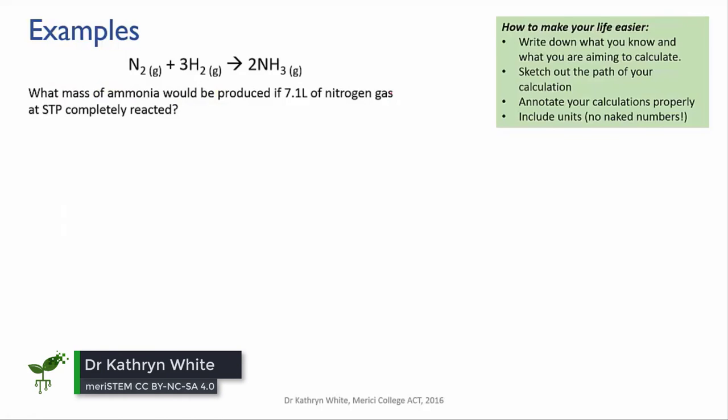Let's just try one more. Again, pause and try and work this out for yourself. We're looking at the ammonia reaction and we have the balanced equation here, and we're told that we're reacting 7.1 liters of nitrogen gas at STP, standard temperature and pressure, and we are to calculate the mass of ammonia produced.